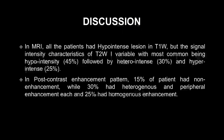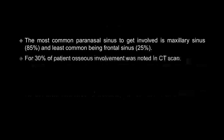On MRI, all patients had hypointense lesions on T1-weighted images, but signal intensity on T2-weighted images was variable — most commonly hypointense, followed by heterointense and hyperintense. On post-contrast enhancement, 15% of patients had no enhancement, 30% had heterogeneous enhancement, 30% had peripheral enhancement, and 25% had homogeneous enhancement. The most commonly involved paranasal sinus was maxillary in 85% of cases; the least commonly involved was the frontal sinus in 25%.